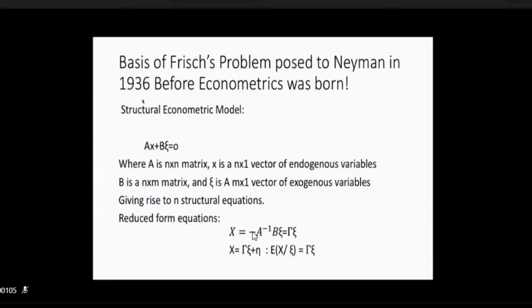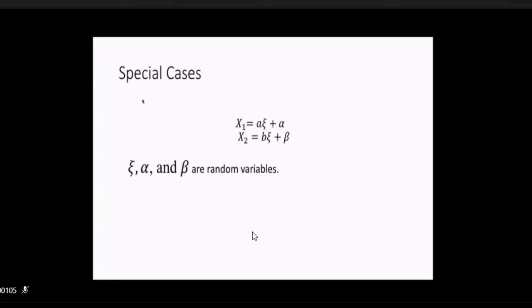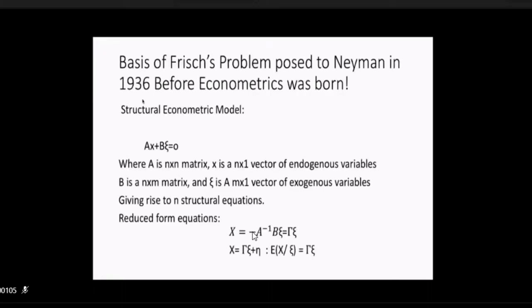So then Frisch raised the question, what should be the distributions on ξ and η such that the left hand side variables in that vector X, there is a linear equation between them. Now if you take a special case of that, with only one exogenous variable ξ and only two endogenous variables, X1 is equal to Aξ plus α, X2 is equal to Bξ plus β and ξ α and β are random variables. Under what distributional assumptions between ξ and α and β is there a linear regression of X1 and X2? So this is a highly special case of a more general problem of building linear structural econometric models.